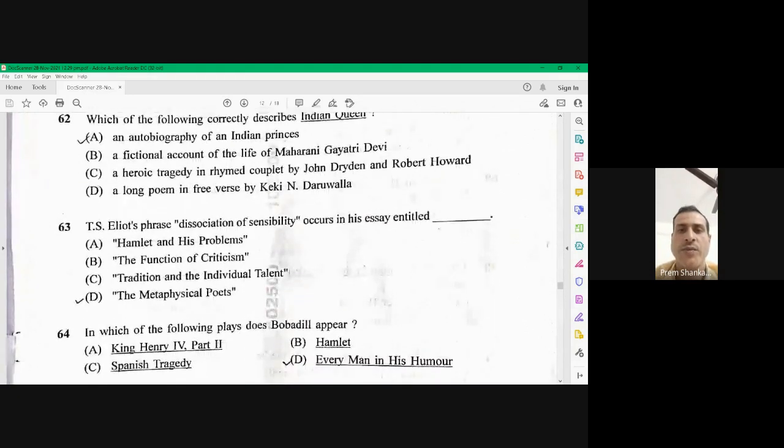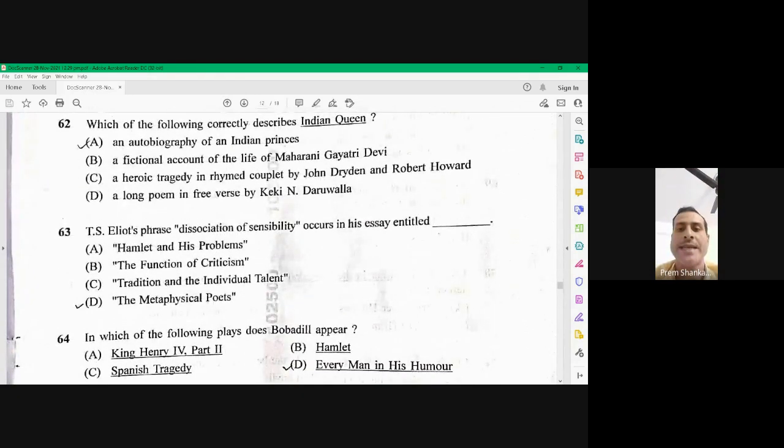Question number 62. Which of the following correctly describes Indian Queen? So Indian Queen is a heroic tragedy in rhyme couplet written by John Dryden and Robert Howard. The right option is C. 62 is C. Question number 63. D is Iliad phrase dissociation of sensibility occurs in his essay entitled The Metaphysical Poets. D is the right option.